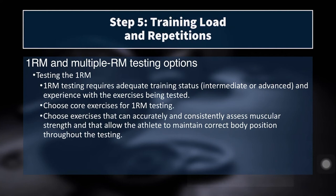We need to know how to test the 1RM when working with athletes. Without a standardized approach, it can be unsafe and produce invalid or unreliable results from test to test. First, 1RM testing requires adequate training status — you should be an intermediate or advanced athlete to do a true 1RM. You can do a 1RM with a beginner safely by ensuring they know the movement and shutting it down as soon as you see form degradation. Maybe they could lift more weight, but if they're not lifting it with proper form, you call that their 1RM and keep training.